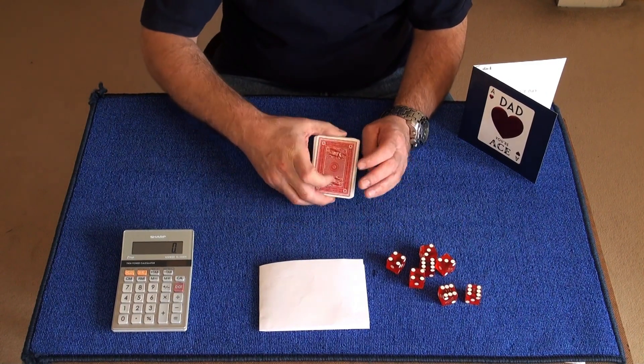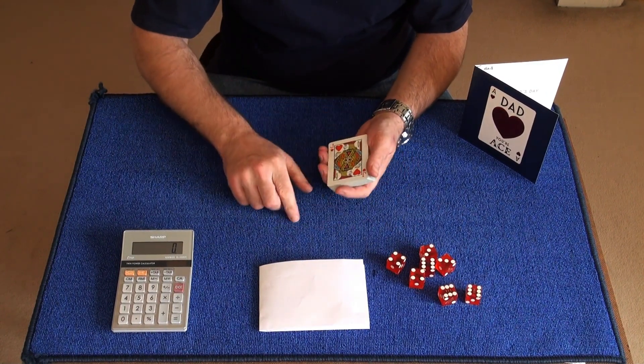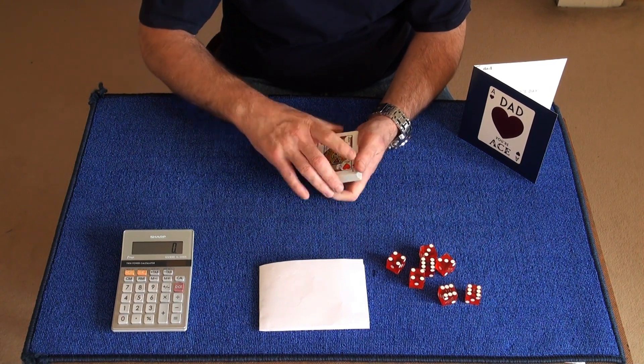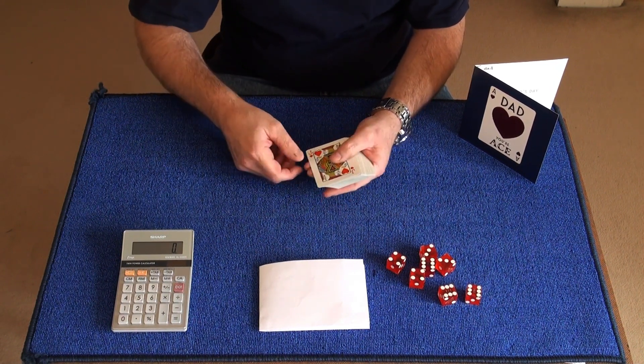You turn back around now. You say I'm going to deal 24 cards down on the table, and I want you to remember the card at your chosen number. So here we go.